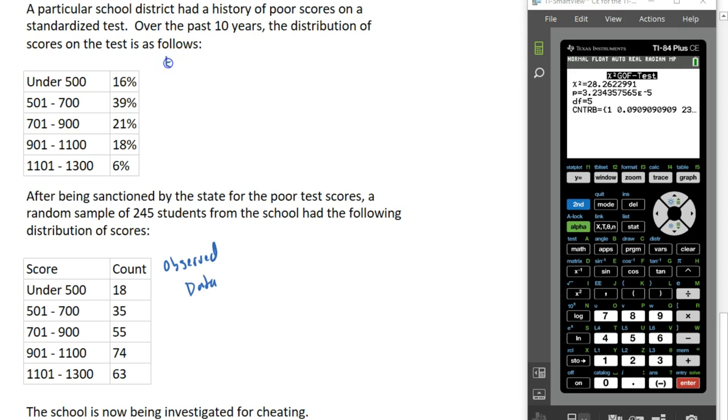We can compute the expected values up here by multiplying each of these percentages by our sample size, which was 245. So the expected number of students who get a score under 500 should be 16% of 245, which is about 39.2. The expected number of students who score between 501 and 700 should be 39% of 245, which is 95.55. I can compute the rest of these expected values in the same way. Those are my expected counts for each of these categories. Now let's do a goodness of fit test.